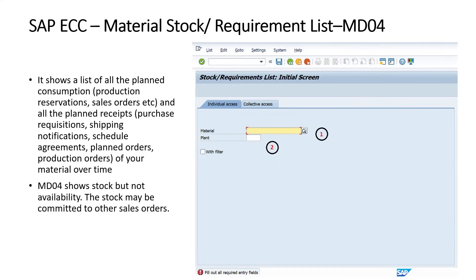To run this command, we will enter MD04. The page will appear where we have to enter the material as step number 1, and the plant or the warehouse as step number 2.